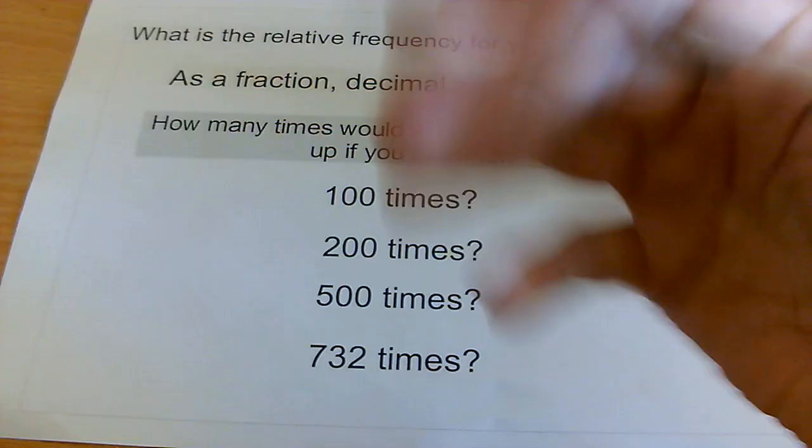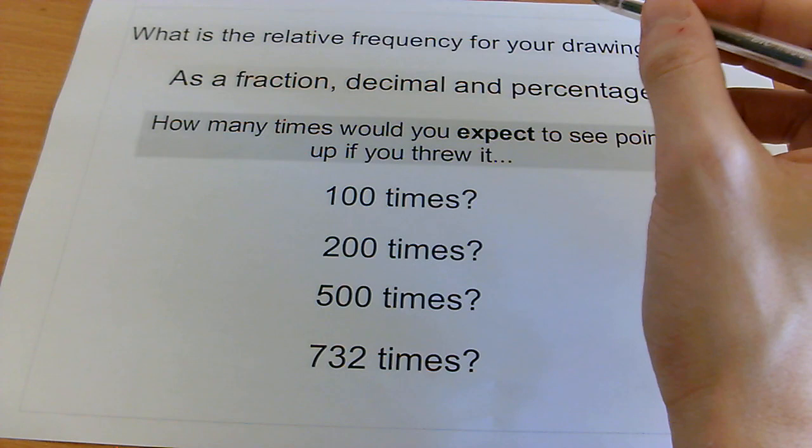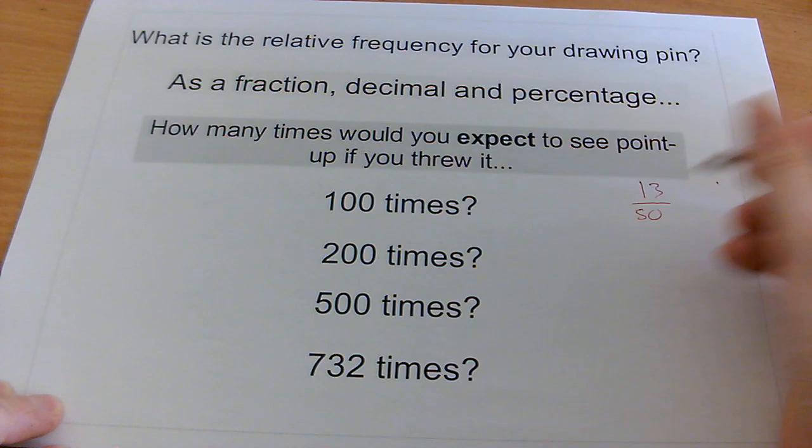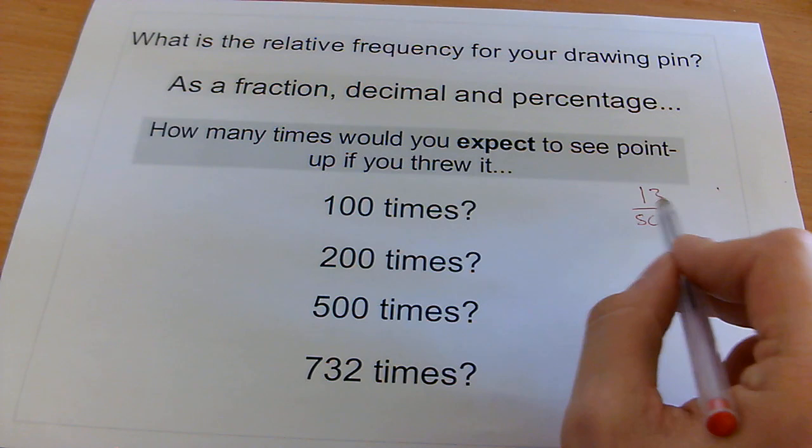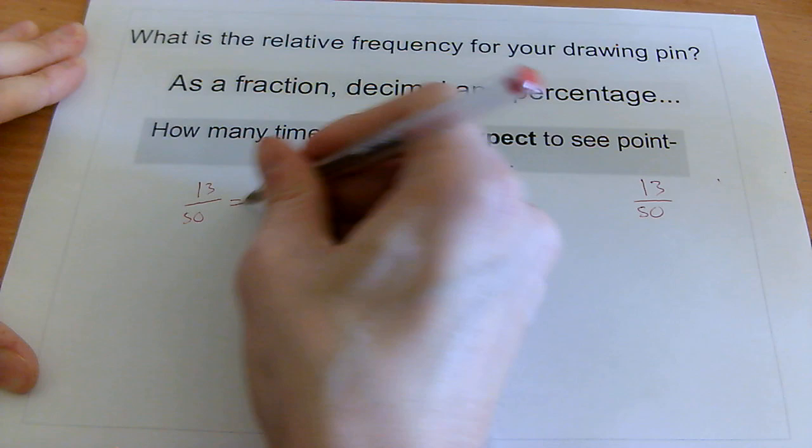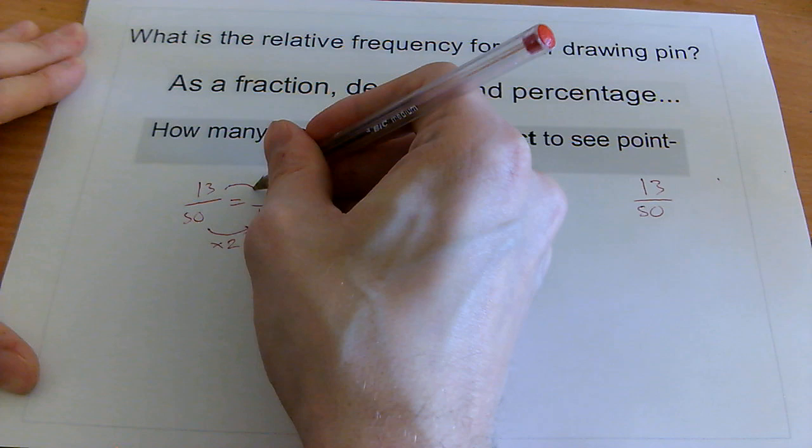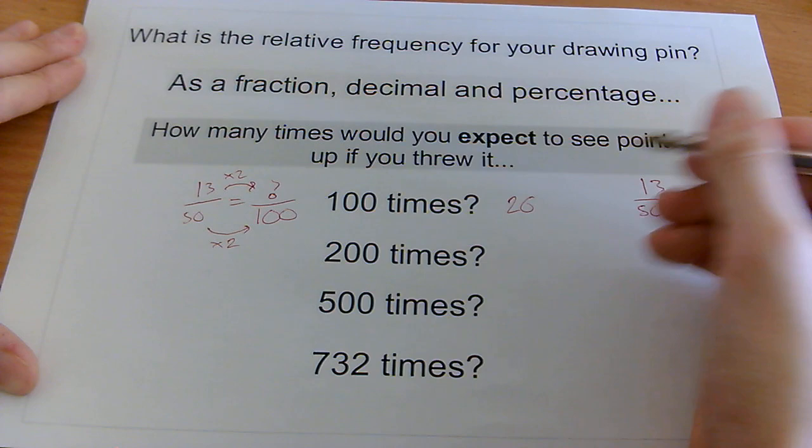So you can use this to do predictions for what might happen if you continue doing your experiments. So I know that my point up relative frequency was 13 out of 50. So I can predict what's going to happen if I do it 100 times. Well, if that's what happens 50 times, it's probably just going to be double that if I do it 100 times. So I think I'll just do 13 out of 50. And then if I make an equivalent fraction over 100, I can see that all I've got to do is double the numbers, and I'll get my answer. So it's going to be 26.